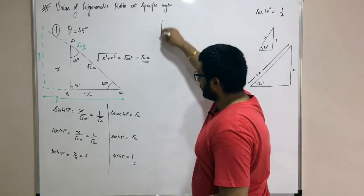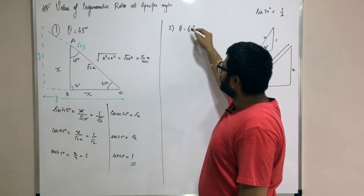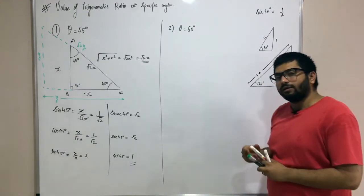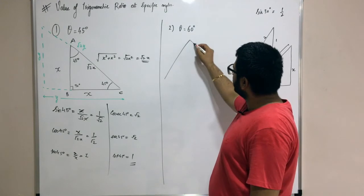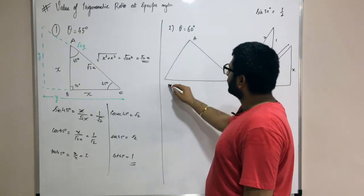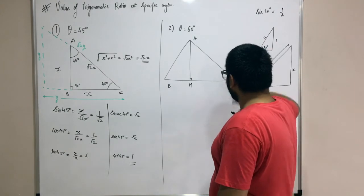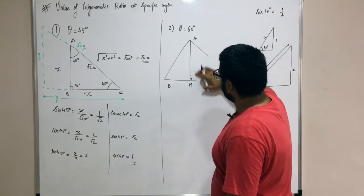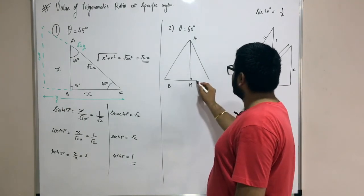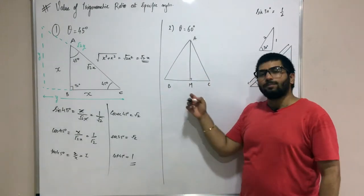Now let's go for the next angle you can calculate. Let's go for 60 degrees. For 60 degrees, you take an equilateral triangle ABC. Now let's draw a perpendicular from A onto BC, and call that point M.